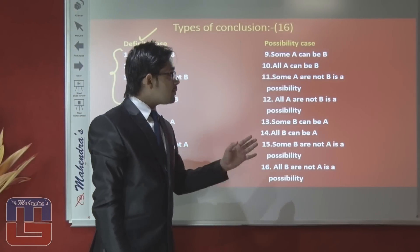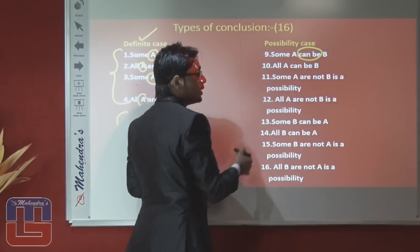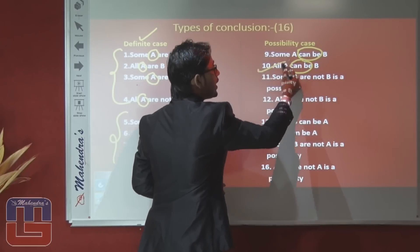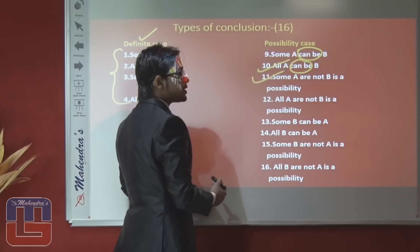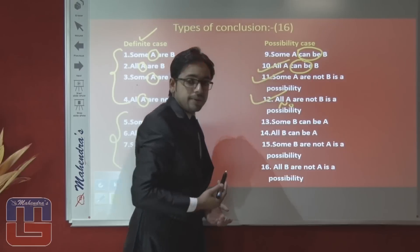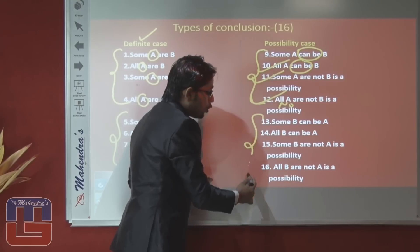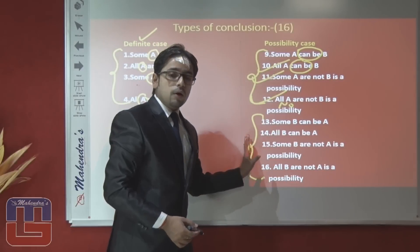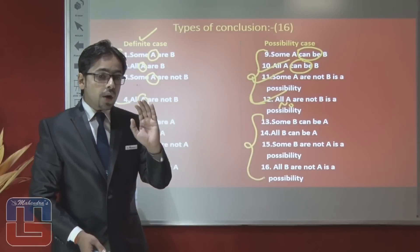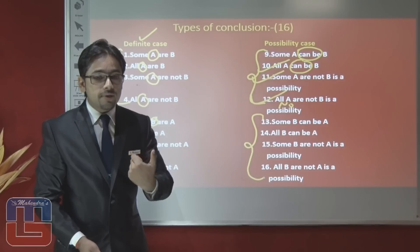The other eight are the basic concept of possibility. These are: some A can be B (possible), all A can be B (possible), some A are not B (possible), and no A are B (possible) — these four are on behalf of A. The rest four are on behalf of B: some B can be A, all B can be A, some B are not A is a possibility, and all B are not A is a possibility. You have to be aware of each and every conclusion about all the variables.